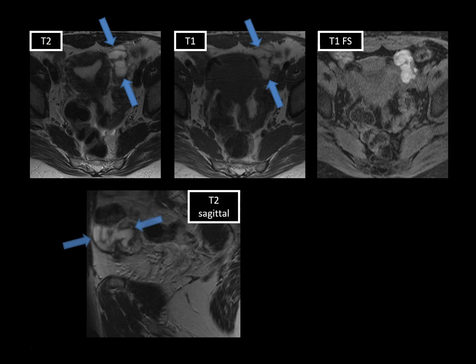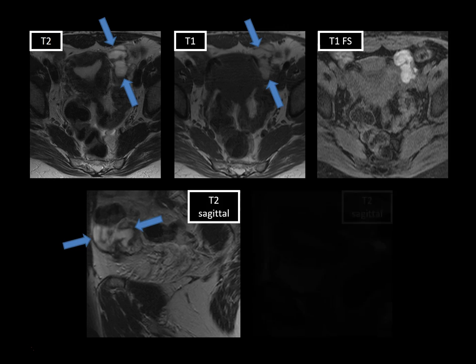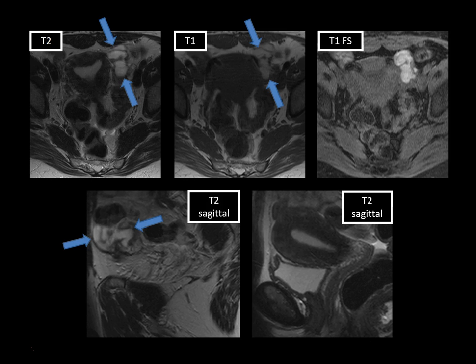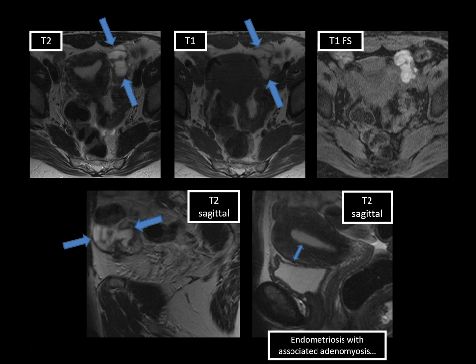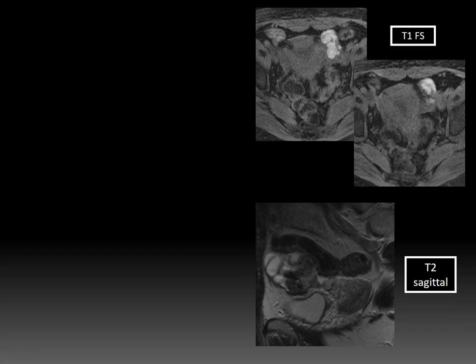On the T2 sagittal image, it does have a somewhat S or C shape, so we're dealing with a fluid-filled tubal structure. The T2 sagittal image of the uterus gives a clue for an accompanying diagnosis: the junctional zone, the hypointense area in the inner myometrium, is markedly thickened at more than 12 millimeters, which is abnormal and indicates adenomyosis. Adenomyosis is ectopic endometrial glands within the uterine myometrium, whereas endometriosis is ectopic endometrial glands outside the uterus. The T1 hyperintense mass in the left adnexa indicates hematosalpinx.